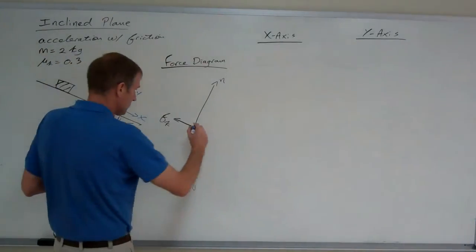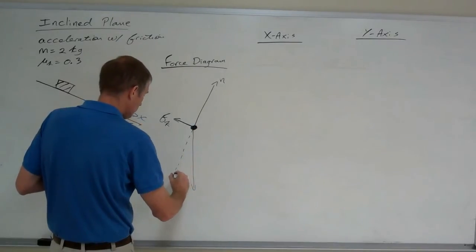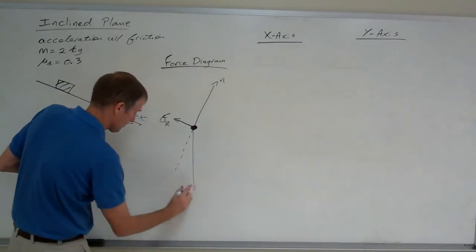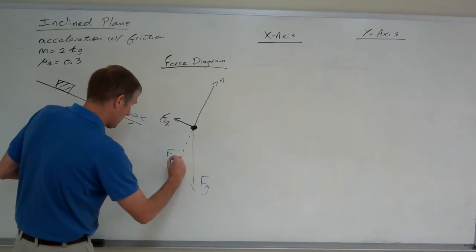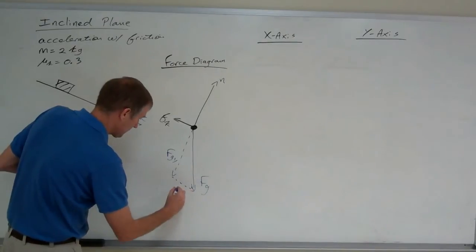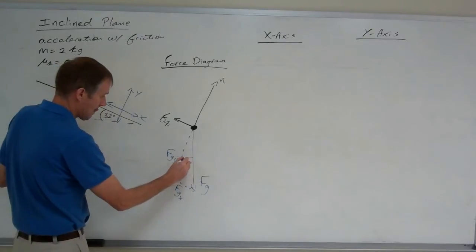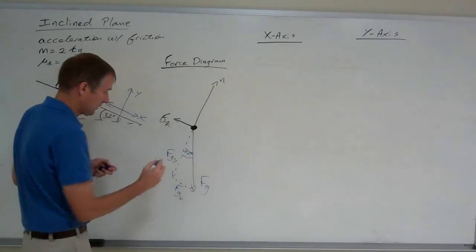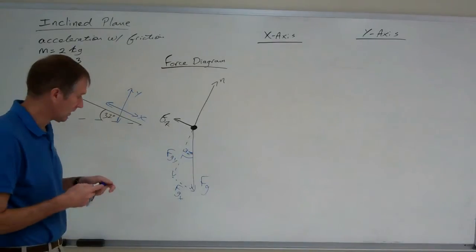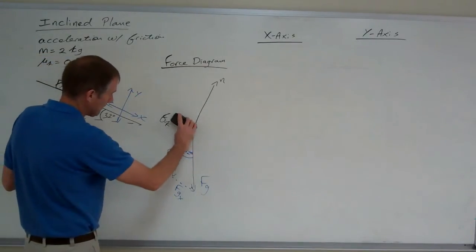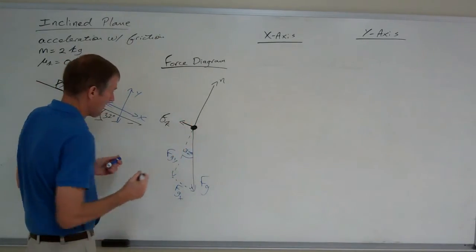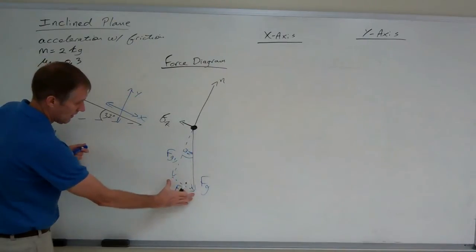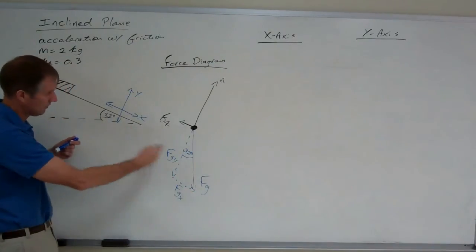So Fg gets the triangle back from the normal force. Whoops, let's move this over here. So that's Fgy. This is Fgx, which is downhill. This is 32 degrees. And since the block accelerates down the ramp, I'm going to actually make the friction a little less. Notice that the friction is shorter than the weight, so it accelerates down the ramp.